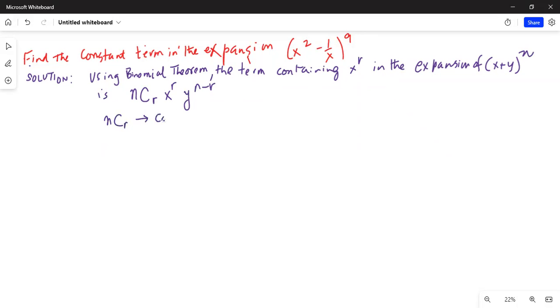nCr is combination of n things taken r at a time.